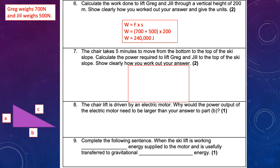Question 7: the chair takes 5 minutes to travel from bottom to top. Calculate the power required. The power equation is power equals work divided by time. Convert 5 minutes to 300 seconds. Work was 240,000 joules. Power equals 240,000 divided by 300 equals 800 watts.